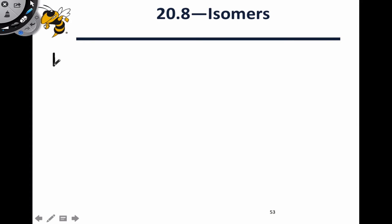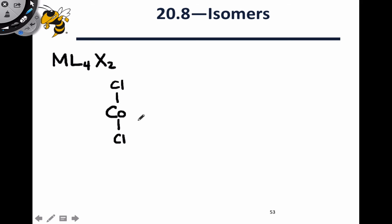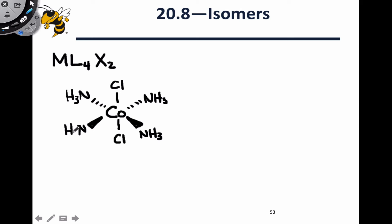Cis-trans isomerism is also observed in octahedral complexes in which four ligands are identical and two ligands are of a different type — something like ML₄X₂. A good example is this cobalt complex with two chlorines in axial positions and four amine ligands in the equatorial plane. This is an octahedral complex with two chlorines (X₂) and four amine ligands (L₄).